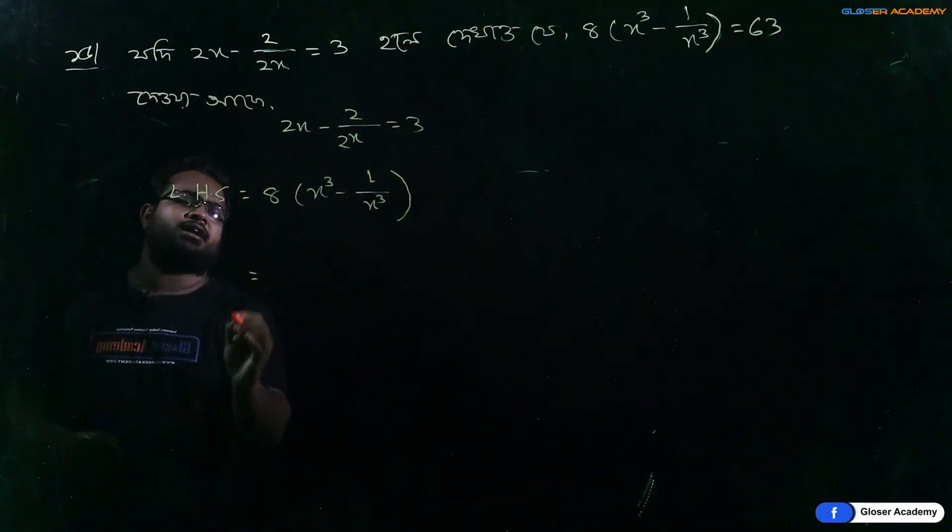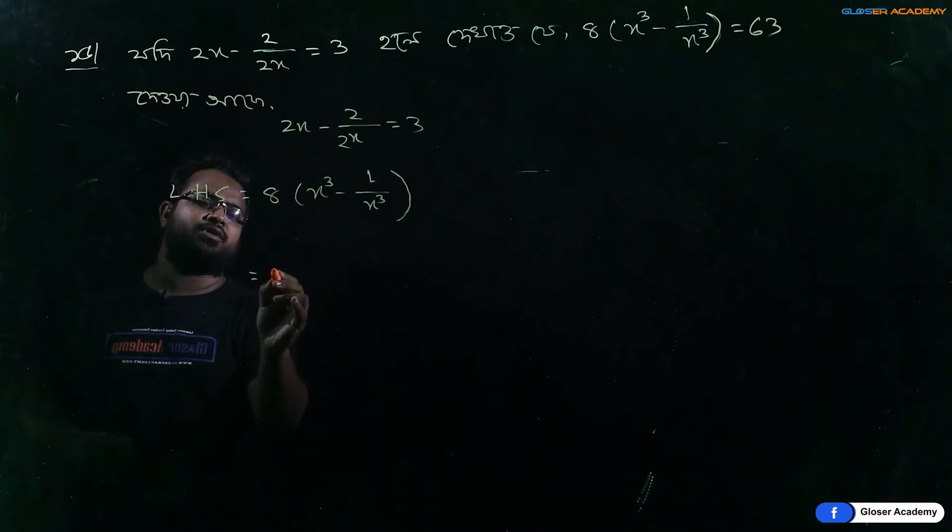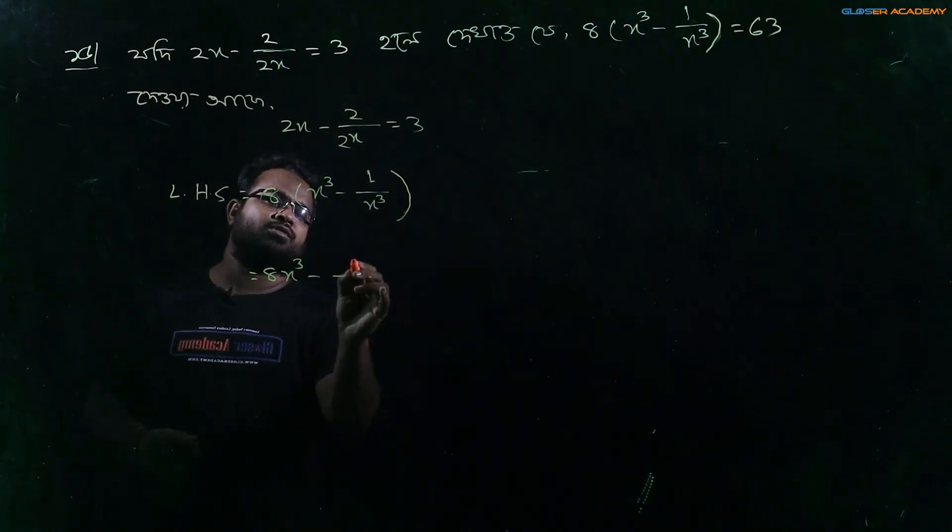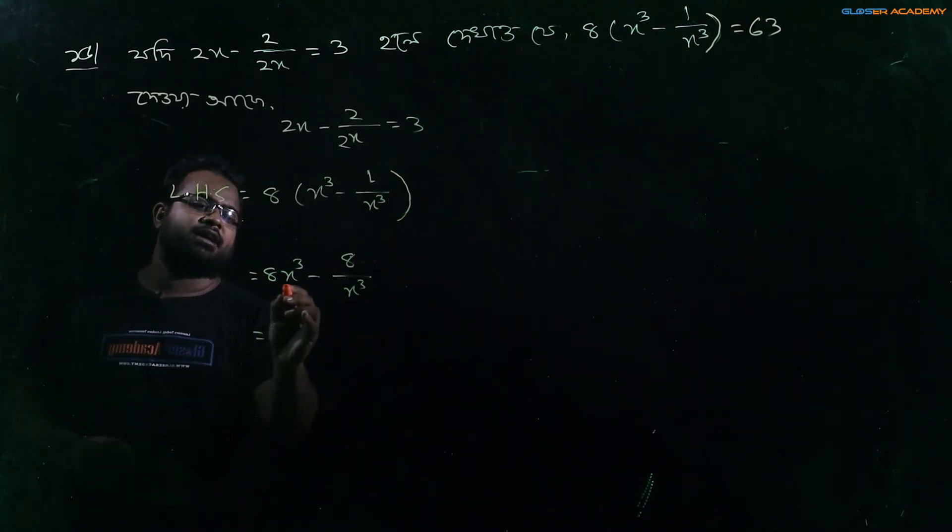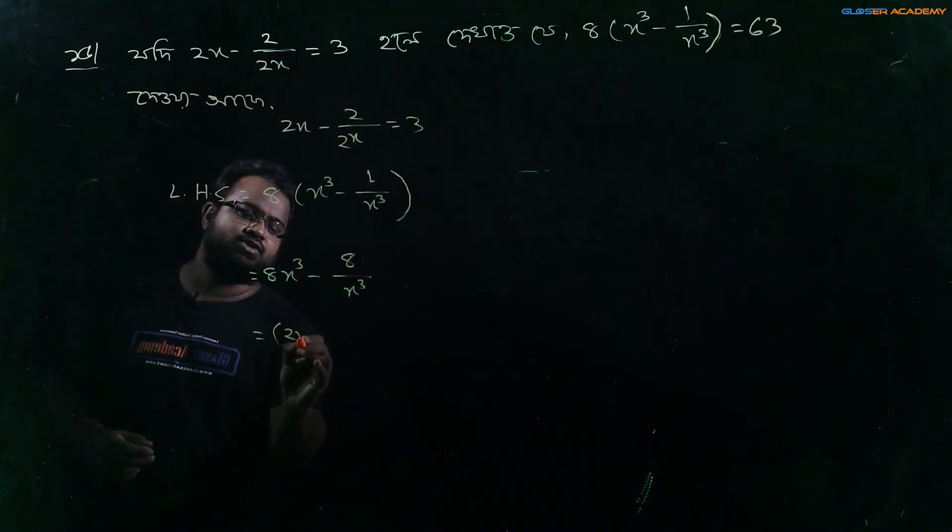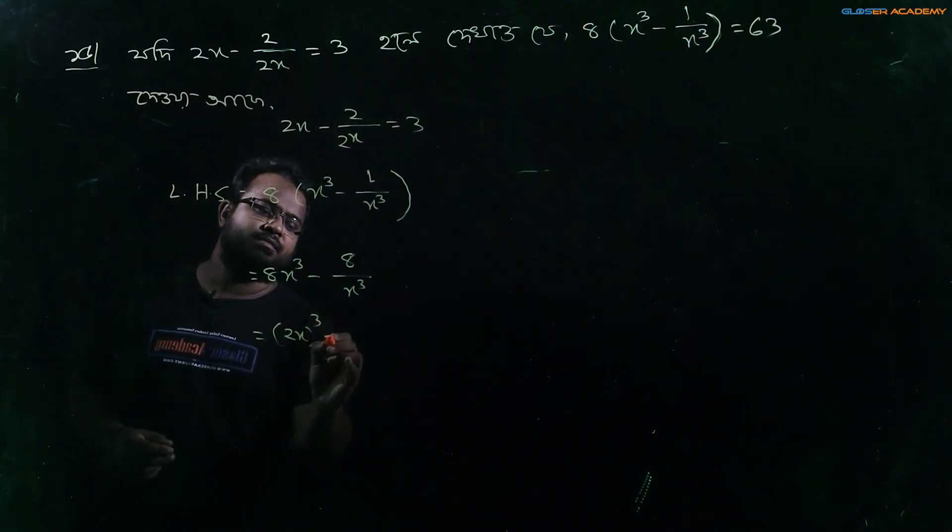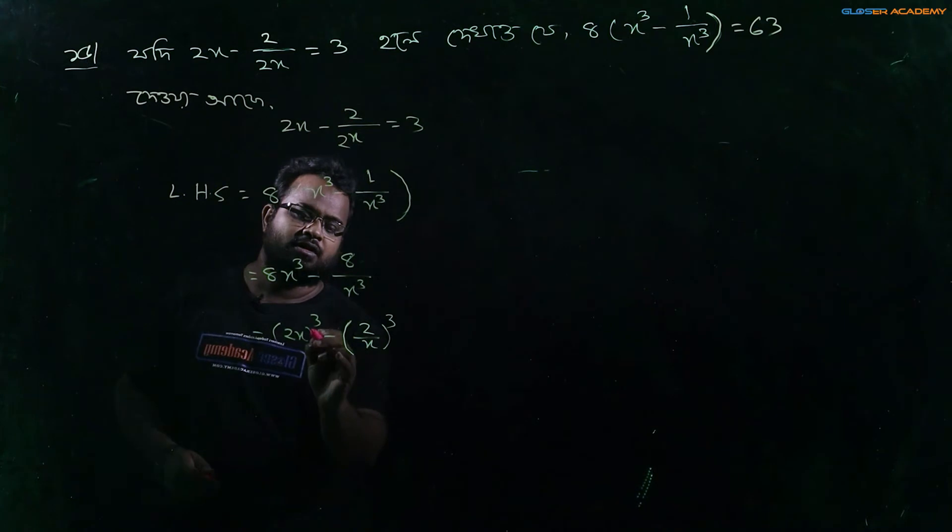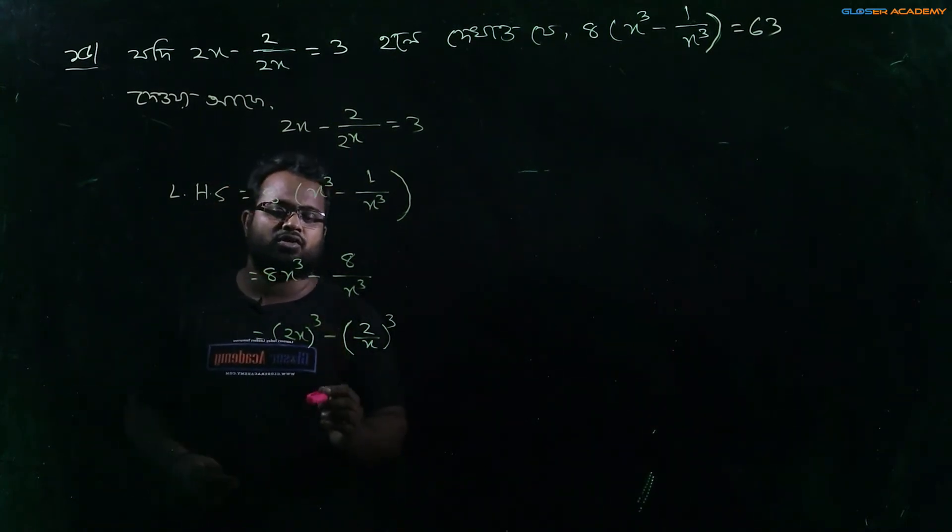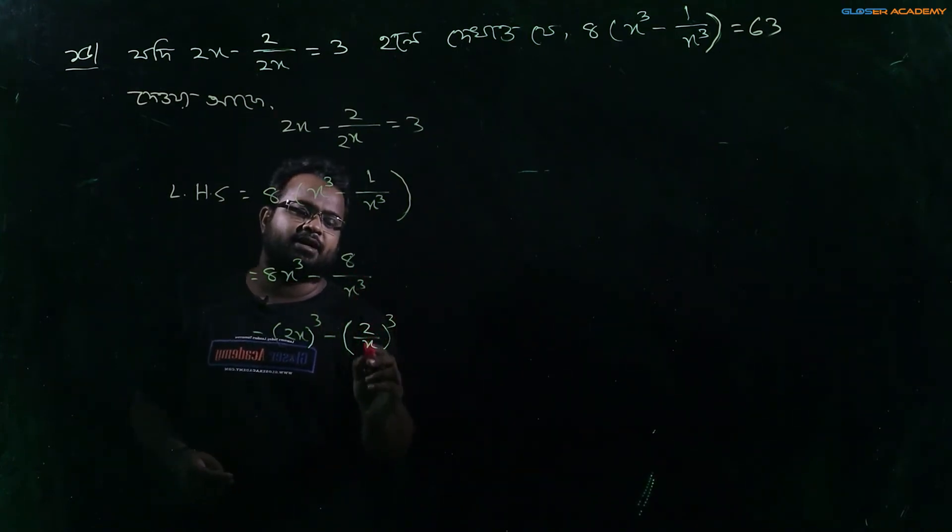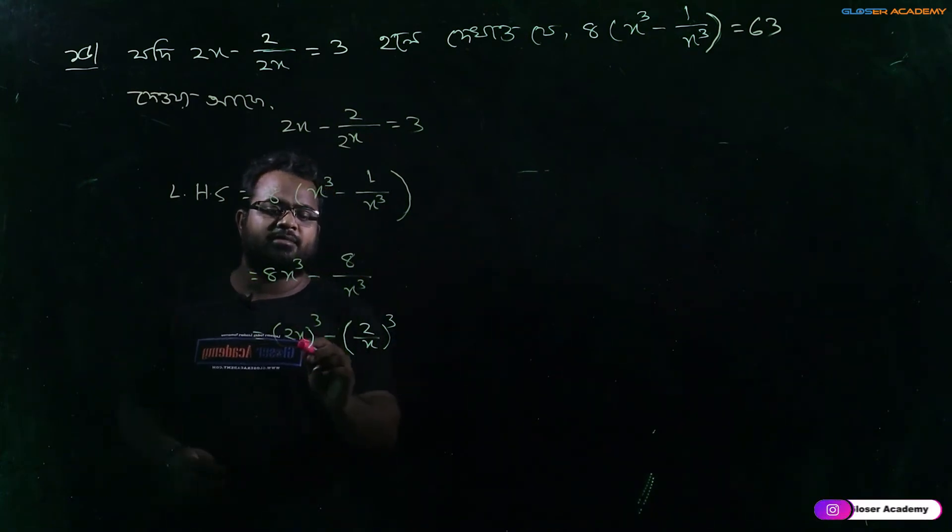So let's see, 2x equals 2x equals 3 minus 2x is 3. So let's see, 2x cube. We have 8x cube, so we have to give 2x whole cube minus, we have to give 8x cube, so we have to give 2x whole cube equals 2 by x.